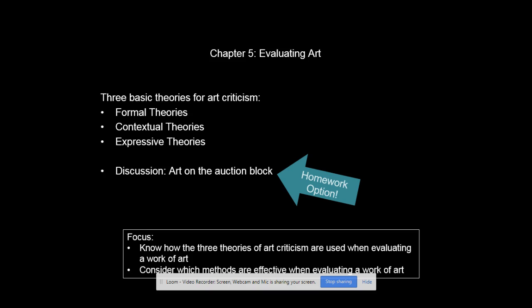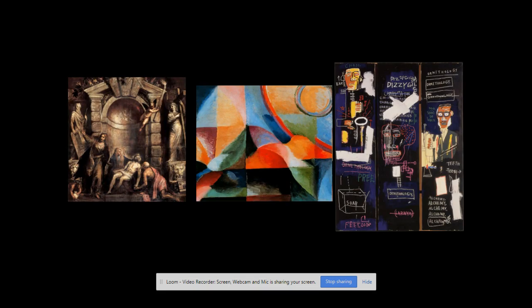This chapter is called Evaluating Art. It's a bit different from the other chapters because we're not really analyzing a composition — we're looking at different ways of deciding whether or not a work of art is any good. I've stripped this chapter down to the basics. As you can see from the outline, there are three basic methods for critiquing a work of art, and we're going to address all three applied to three different works of art.